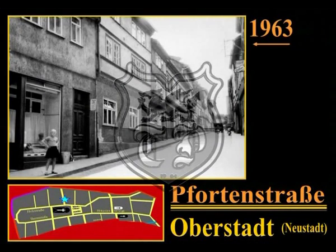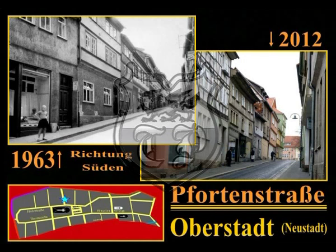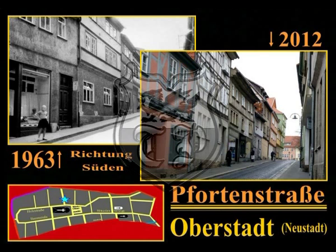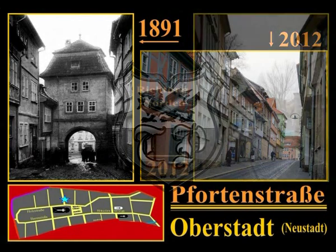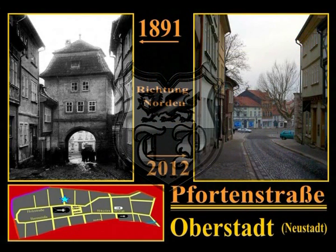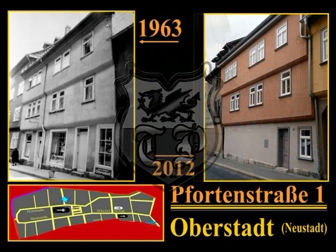Von ihrer ersten Erwähnung im Jahre 1387 bis 1714 trug die Pfortenstraße den Namen Eselsgasse. Bis dahin wurde auch das Stadttor am Ende der Pfortenstraße als Eselspforte bezeichnet – diese Pforte war so eng, dass sie nur mit Eseln und nicht mit größeren Wagengespannen passiert werden konnte. Im Jahre 1714 wurde die Eselspforte abgerissen und durch das größere und breitere Pfortentor ersetzt. Auch das Pfortentor war dem steigenden Verkehr nicht mehr gewachsen und wurde als vorletztes Stadttor im Jahre 1891 abgerissen.